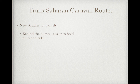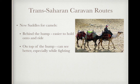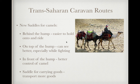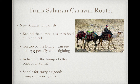New saddles for camels were invented that really helped with this trade. A saddle that went behind the hump meant it was easier to hold on and ride. A saddle built on top of the hump — you can see this gentleman sitting here — allows people to see better, especially while fighting. A saddle in front of the hump allows for more control of the camel. And the final type of saddle created was one not for riding, but for carrying goods, which allowed people to transport more goods. Be able to identify and explain one of these new types of saddles for camels that increased trade.